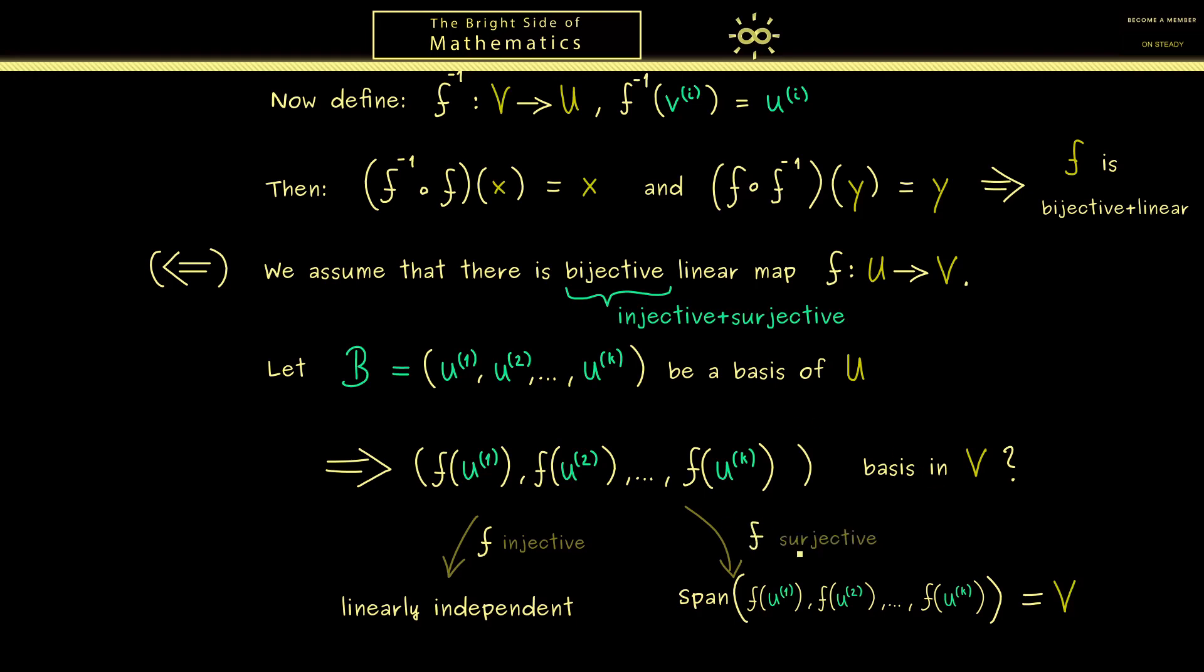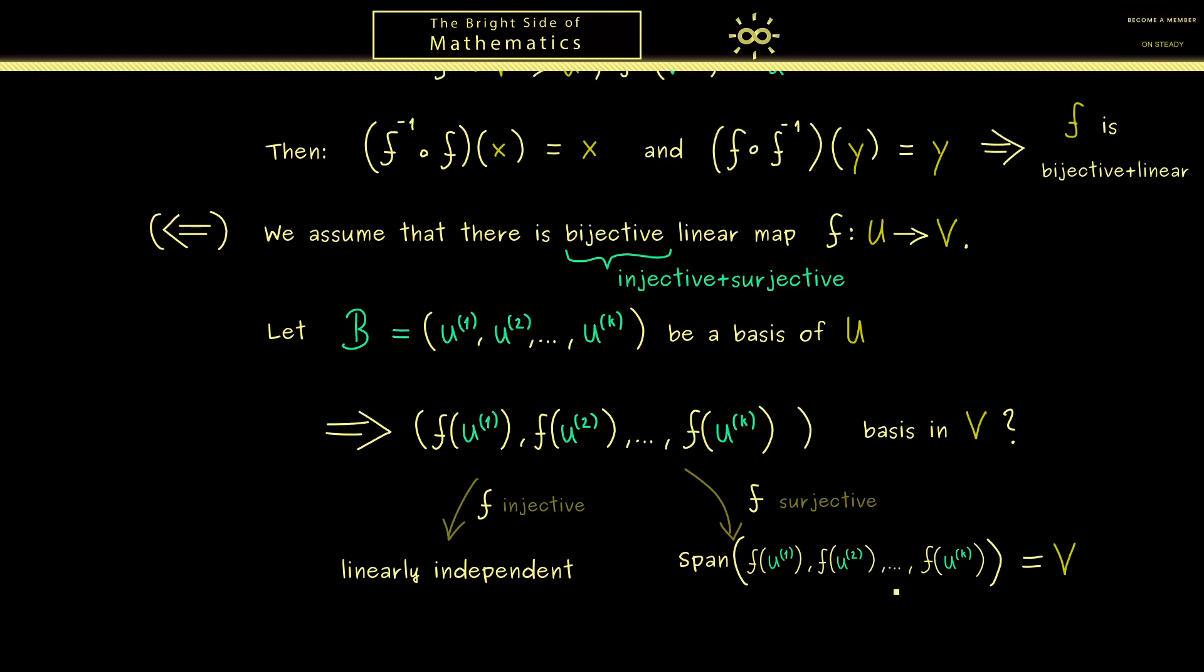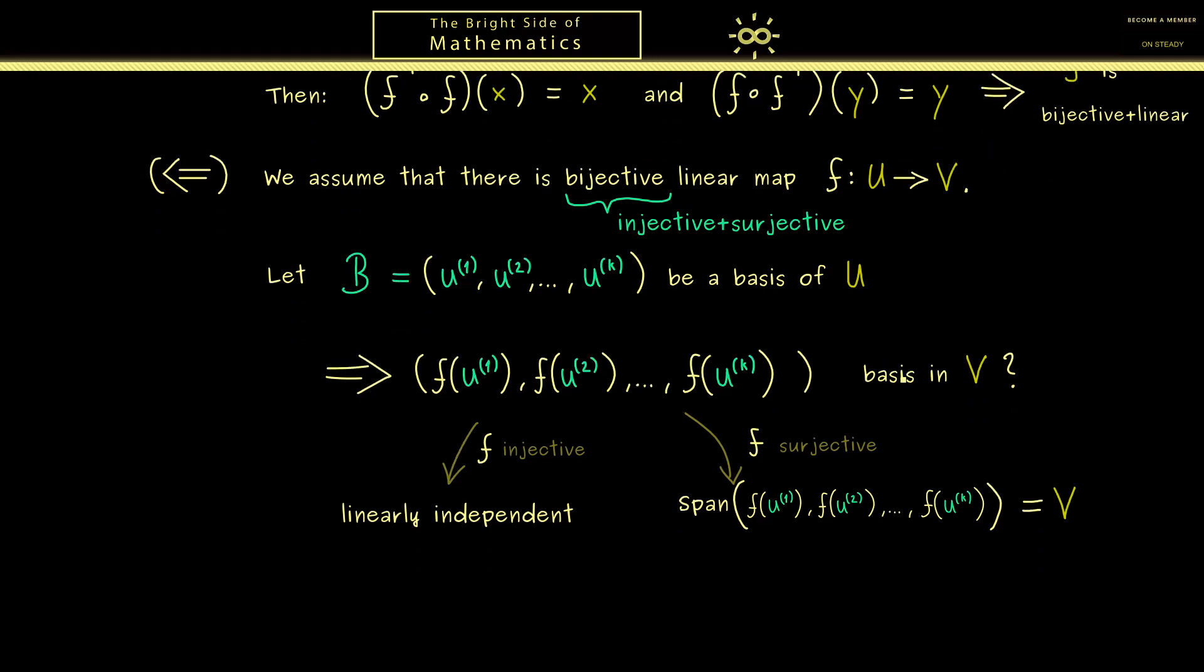There please recall, surjectivity means we hit all the elements in V and now we can use the linearity of F again to just use linear combinations of the basis vectors. And then it immediately follows that the span of the whole family is V. Ok and there you see this is all what we need, we have the linear independence and this generating claim. And this is exactly the definition of a basis. And now we see the number of elements is the same, hence the dimension is the same.